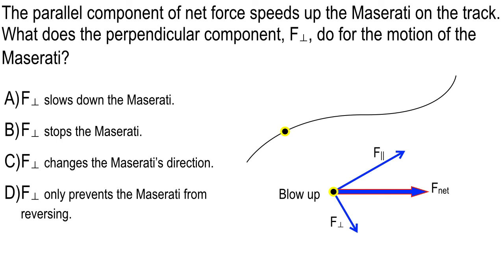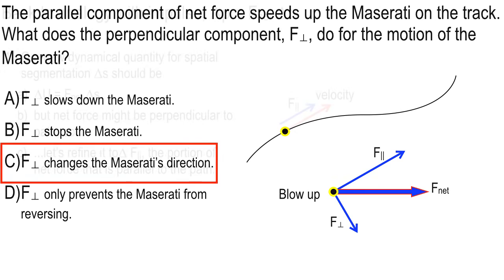Okay. We got some explaining to do here. A number of you voted for slows down. That is incorrect. The perpendicular component. This is the correct answer. F perpendicular changes the direction. If it's perpendicular to the velocity, it's not really working with the velocity to speed it up or against it to slow it down. It's just perpendicular. It's neither with nor against. So, it's just going to change the direction. Make sure you keep that in mind when you're studying these things.